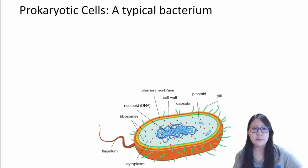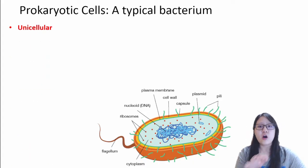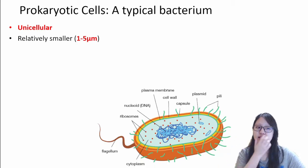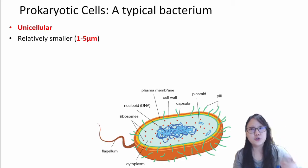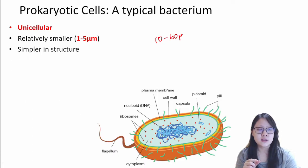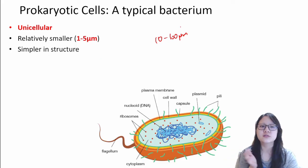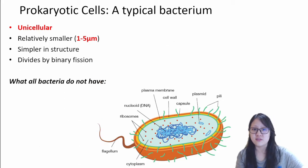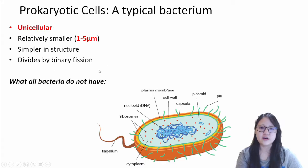Now, here are the main characteristics of prokaryotic cells. They are all unicellular — all bacteria and archaea are unicellular. They are relatively smaller in size than eukaryotic cells. Eukaryotes are around 10 to 100 micrometers in diameter. However, prokaryotic cells are around 1 to 5 micrometers only. They are also a lot simpler in structure and divide by binary fission instead of mitosis or meiosis.